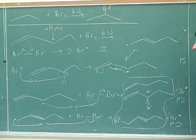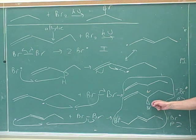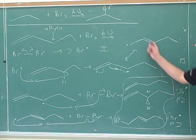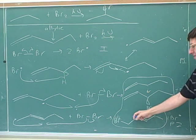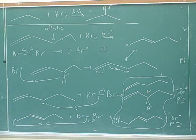So the way this tends to be tested is they say, show all possible products. And they're testing whether people can think about both the different stereo isomers and maybe more important, the different resonance structures that give us different constitutional isomers.